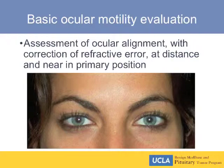They may have hand motion vision in one eye and good vision in the opposite eye — the eye may be askew and they may deny having double vision. You do a great surgery that allows them to recover vision in their hand-motion eye, which now allows them to see double. And unless you have some documentation before surgery, the patient asks: 'Doctor, what did you do? You caused me to have double vision.'